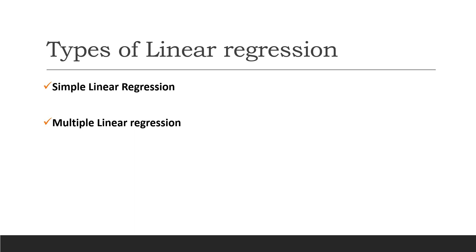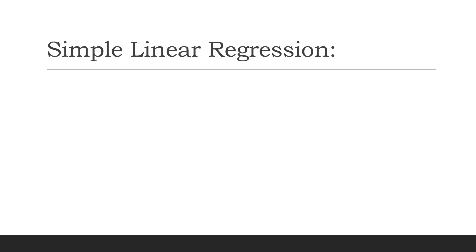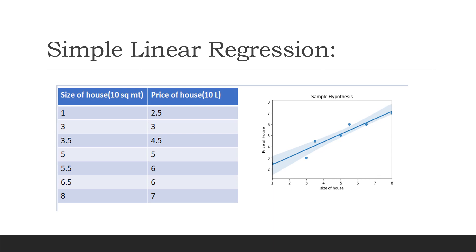Now, the types of linear regression: there are two types. The first is simple linear regression and the second is multiple linear regression. Simple linear regression is a linear regression model with one independent and one dependent variable. In the example of house size and price, the price depends only on one independent variable — the size — so there is one independent and one dependent variable.